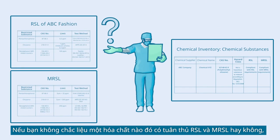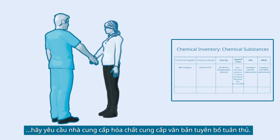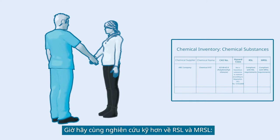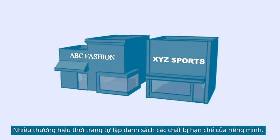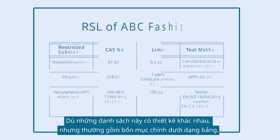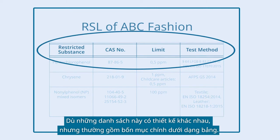If you are unsure whether the chemicals conform to RSL and MRSL, request a written conformity declaration from the chemical supplier. Let's take a closer look at the RSL and MRSL. Many fashion brands have their own restricted substance list. No matter how different the design of these lists is, they usually show four key items in a table format.